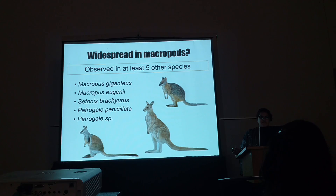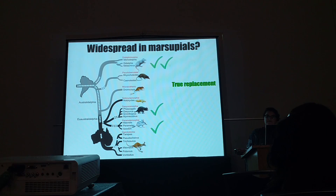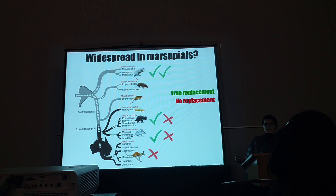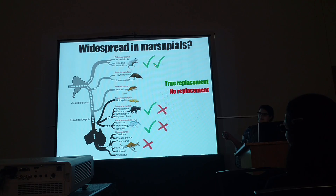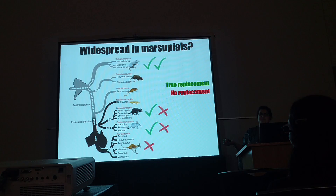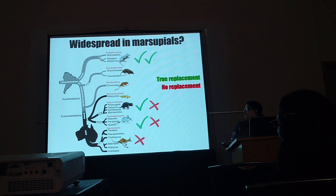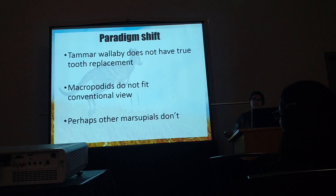Further review of the literature has shown that maybe there's no tooth replacement in other groups of marsupials as well. In North American marsupials, it seems consistently that they have true tooth replacement. But there are arguments about whether it happens in dasyuromorphs such as the Tasmanian Devil, or peramelomorphs such as bandicoots. It seems that it's not happening in kangaroos and wallabies. This means we have to change our concept of the generalisation that marsupials have true tooth replacement. The Tamar Wallaby does not, for sure, and it seems that macropodids don't fit this conventional view either.